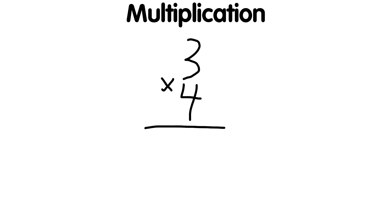Let's look at an example of multiplying the numbers 3 and 4. We multiply each digit of the multiplier, 3, by each digit of the multiplier, 4, and write the results in a column. We then add these results to get the product, 12.